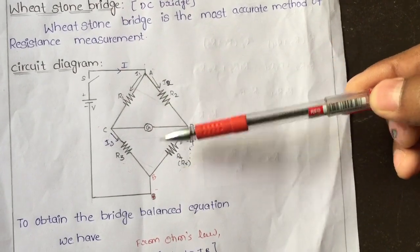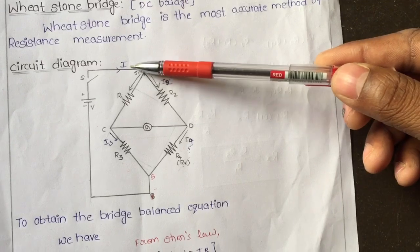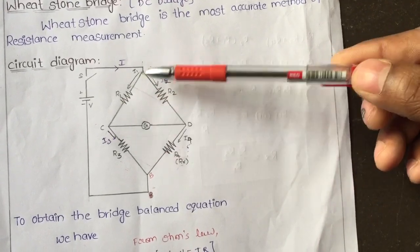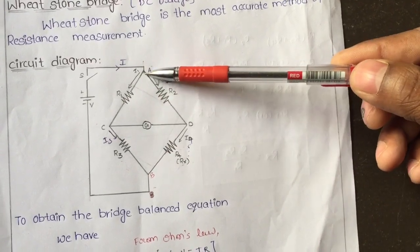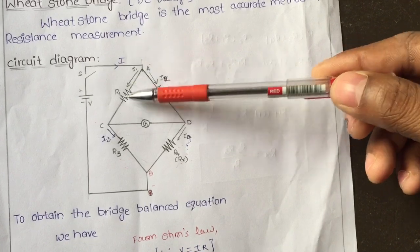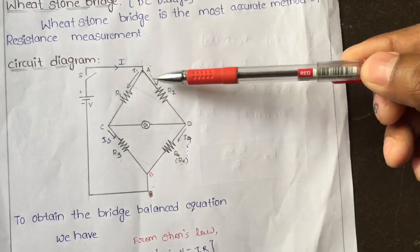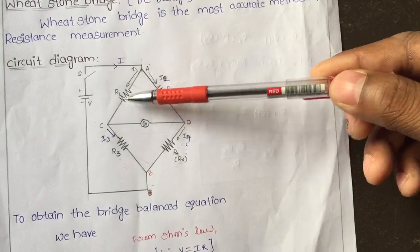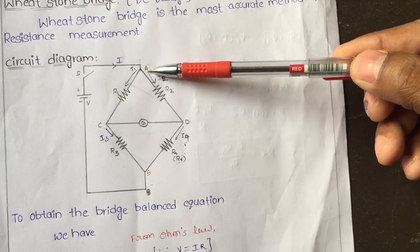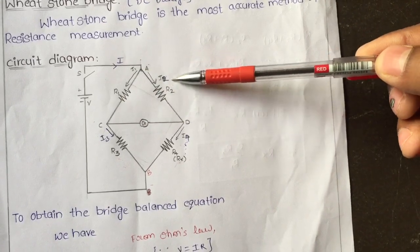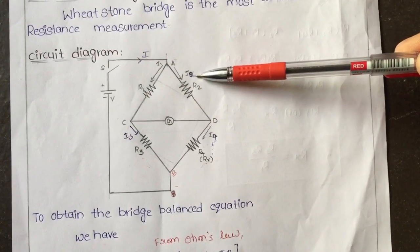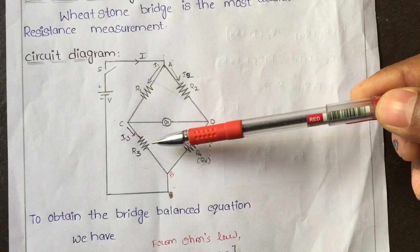Here I is the total current flowing through the junction. The resistors are connected such that the current divides: across R1 the current is I1, across R2 the current is I2.